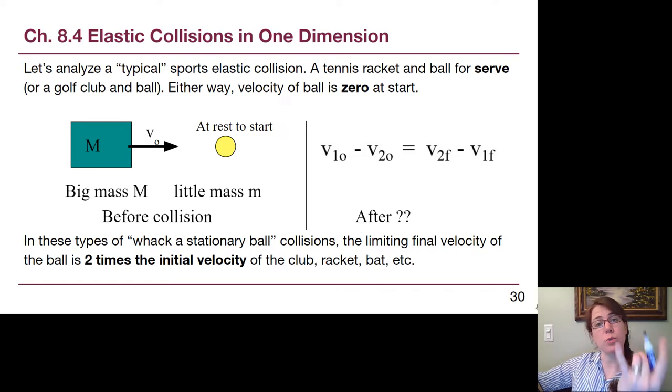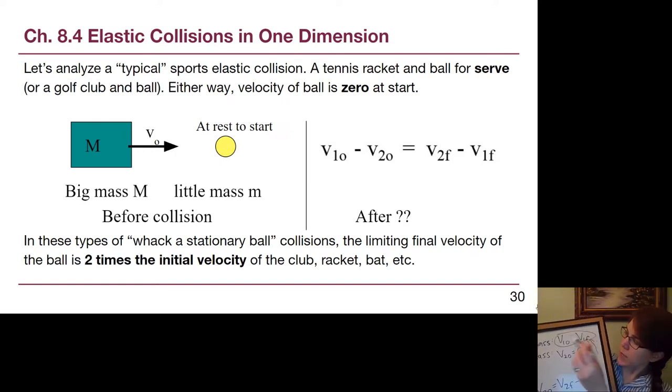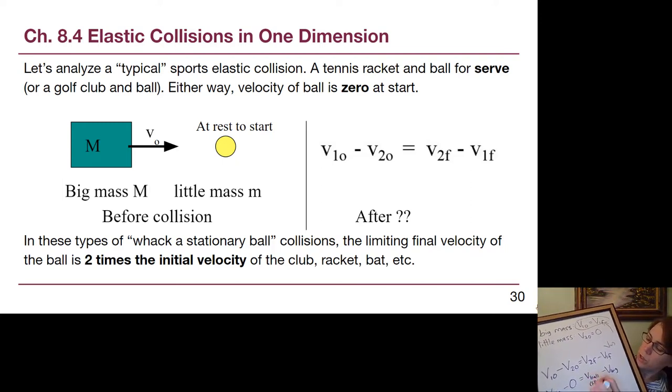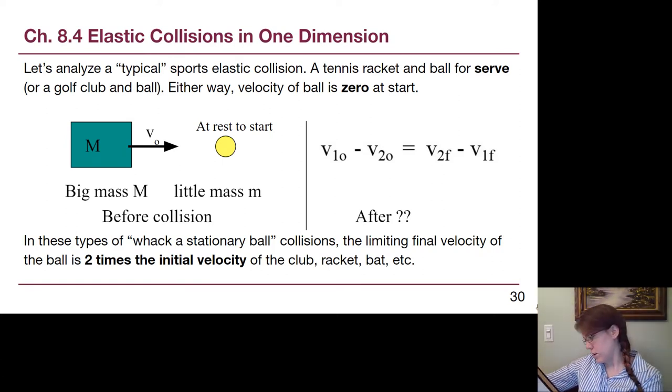note how the 1 and the 2 switch because if something's coming in and then bouncing away, it has to switch directions. So we have the big velocity minus zero equals the ball's velocity, or the little mass minus that big mass velocity. So all I'm doing is plugging in the fact that these two V1 initial and V1 final are both the big mass. And that the ball originally started moving at, or did not start moving, it started with a zero velocity. So if we want to know the velocity of the ball, we just add V big to both sides. And what we end up with is 2 times the velocity of the big mass is the velocity of the ball, the little mass.